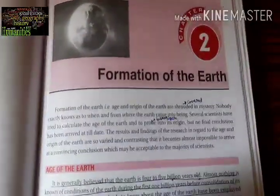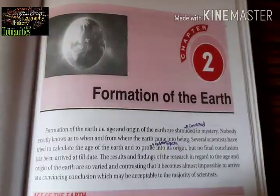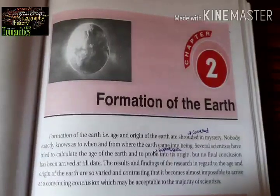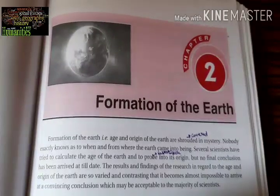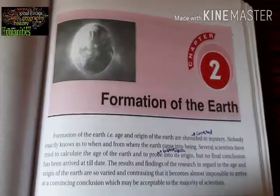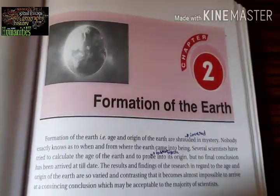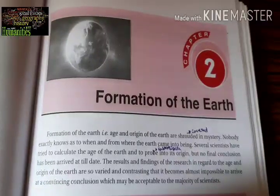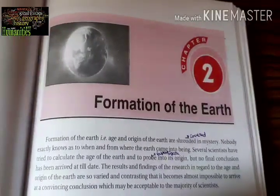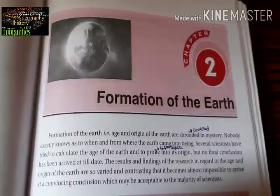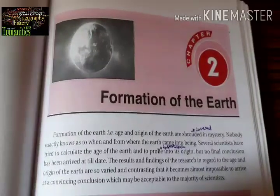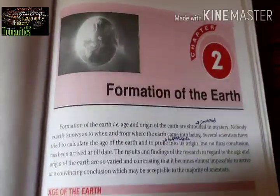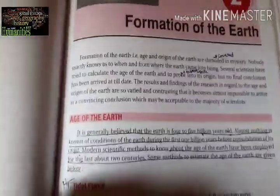Formation of the Earth — its age and origin are shrouded in mystery. Shrouded means covered in mystery. Nobody exactly knows as to when and from where the Earth came into being. Several scientists have tried to calculate the age of the Earth and to investigate into its origin, but no final conclusion has arrived till date. The results and findings are so varied and contrasting that it becomes impossible to arrive at a convincing conclusion accepted by the majority of scientists. So it is still surrounded by mystery.